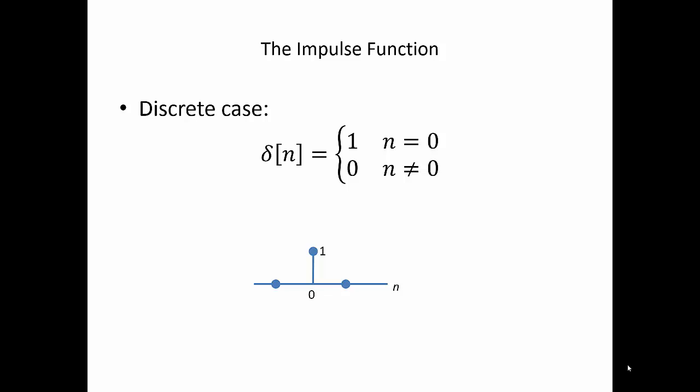The impulse function exists in both discrete and continuous forms. We use the Greek letter delta when we're talking about the impulse function. When we're talking about a discrete function, we use square brackets and letter n. This particular discrete function has a value of 1 when n is 0, and a value of 0 when n is not equal to 0.